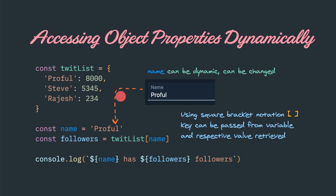Today we will discuss one very simple but important concept. Let's say we have an object. We know how to access its individual properties using the dot notation — for example, twitlist.profile will lead to this 8000 value. But do you also know that we can access object properties dynamically using the square bracket notation? This is extremely powerful and can be very handy in many different use cases.